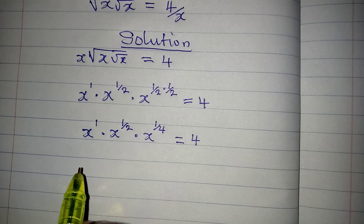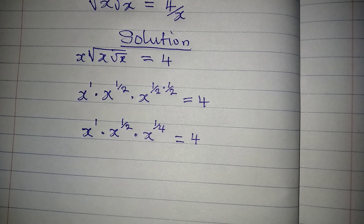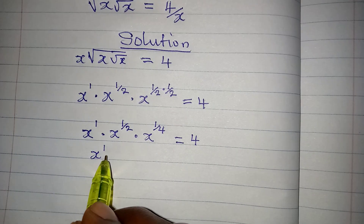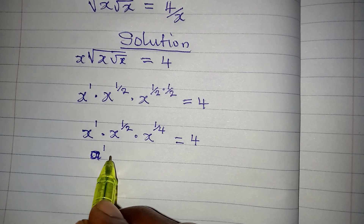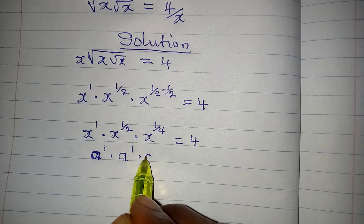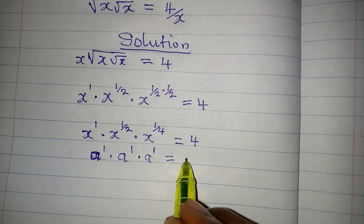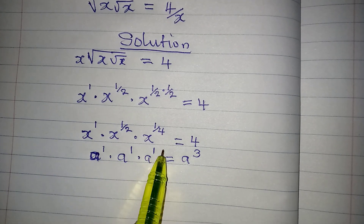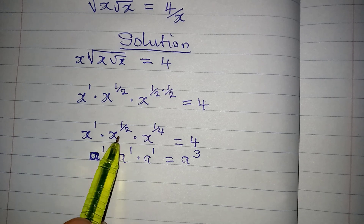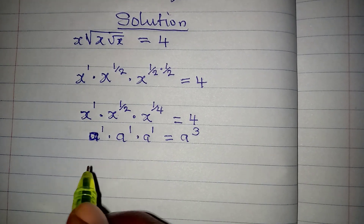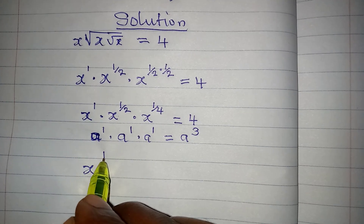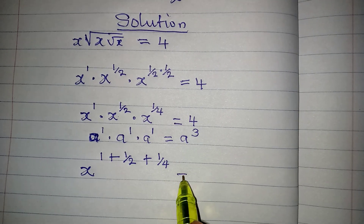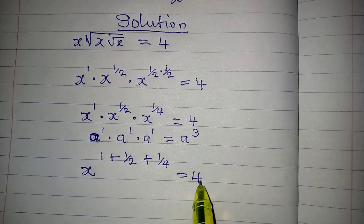The next step is to apply one of the laws of indices. That law says if you have a to the power of 1 times a to the power of 1 times a to the power of 1, this is the same as a to the power of 3, because you pick one of the bases and add the powers. So I'll pick x as the common base and add all the powers: x to the power of 1 plus 1 over 2 plus 1 over 4, equal to 4.